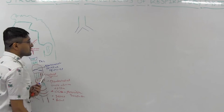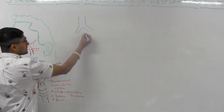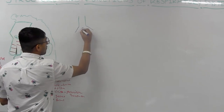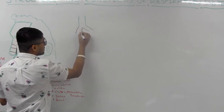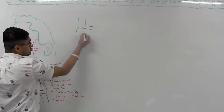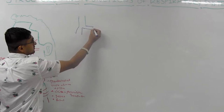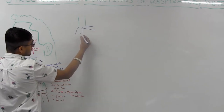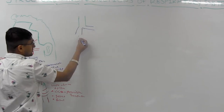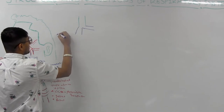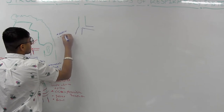These two parts are called your primary bronchi. You have a right primary bronchus and a left primary bronchus. The right bronchus is wider and more vertical, and it's also shorter.